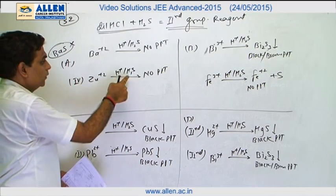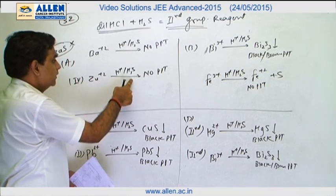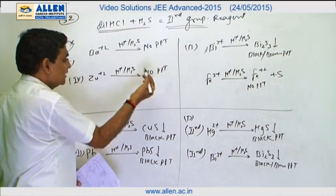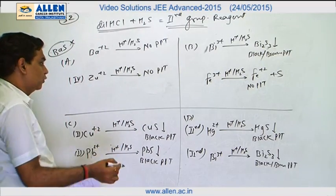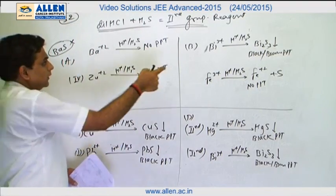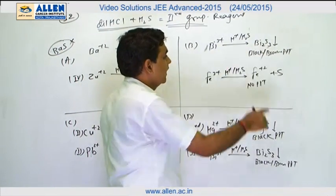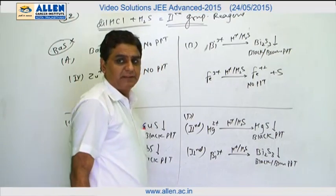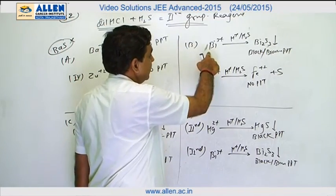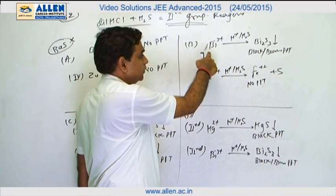Zn²⁺ when reacting with H2S in acidic medium does not produce ZnS because ZnS is formed only in alkaline solution in fourth group. Option B: bismuth plus 3 when reacting with acidic medium H2S produces Bi2S3 black brown precipitate because bismuth plus 3 cation belongs to second group in salt analysis.